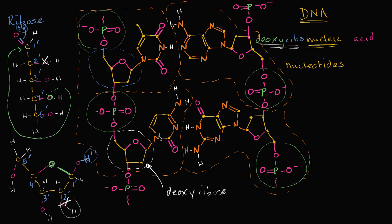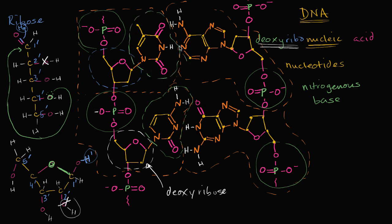The last piece of a nucleotide is this chunk right over here — these we call nitrogenous bases. You can see we have different types of nitrogenous bases. This is a nitrogenous base; this right over here is a different nitrogenous base; this right over here is another different nitrogenous base. Notice this one only has one ring, this one has one ring, but this one has two rings, and this one over here has two rings.